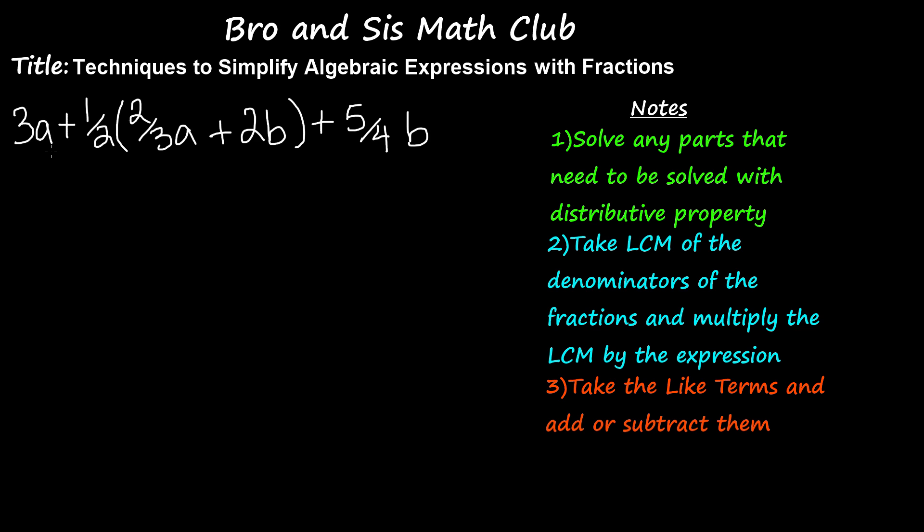You will start off by solving any parts that need to be solved with distributive property, right? The first thing we'll do is we will solve 1 half parentheses 2 thirds A plus 2B. This we will solve by using distributive property. First we will solve by 2B, next we will solve by 3A, next we will multiply 1 half by 2B.